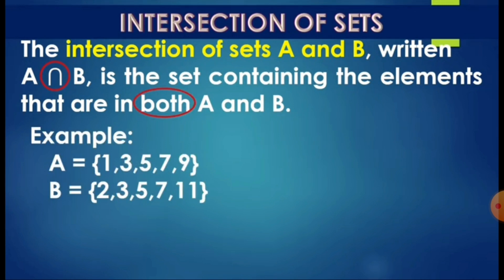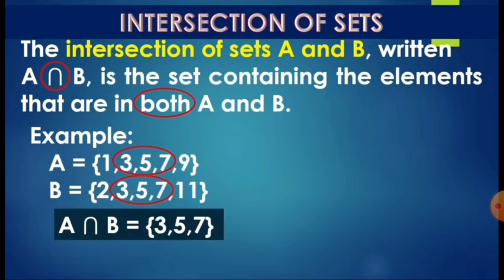For example, the elements of A are 1, 3, 5, 7, 9. The elements of B are 2, 3, 5, 7, and 11. Now, you look at the elements of A and B. What elements do they have in common? 3, 5, and 7. So the intersection of A and B contains these elements — 3, 5, and 7 — which means they have common elements in both sets.